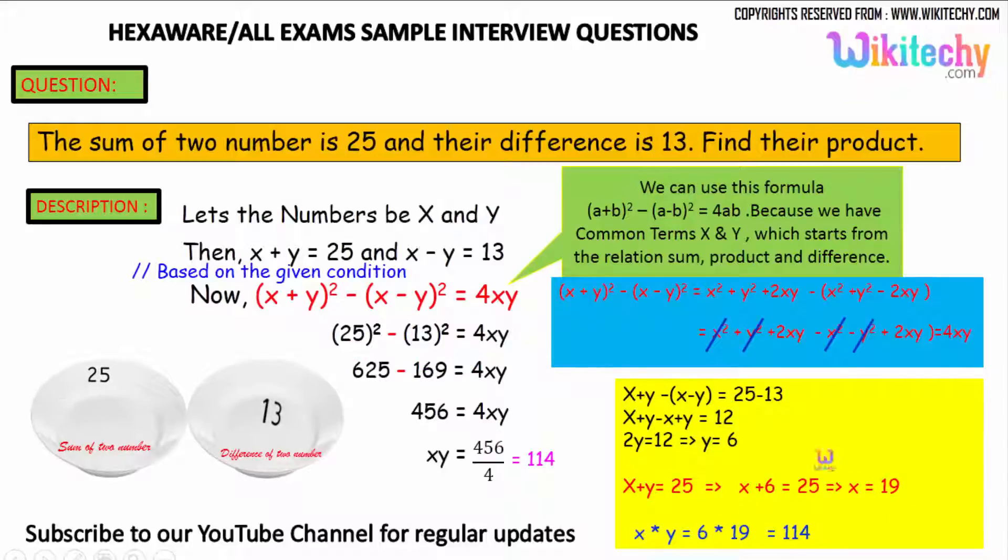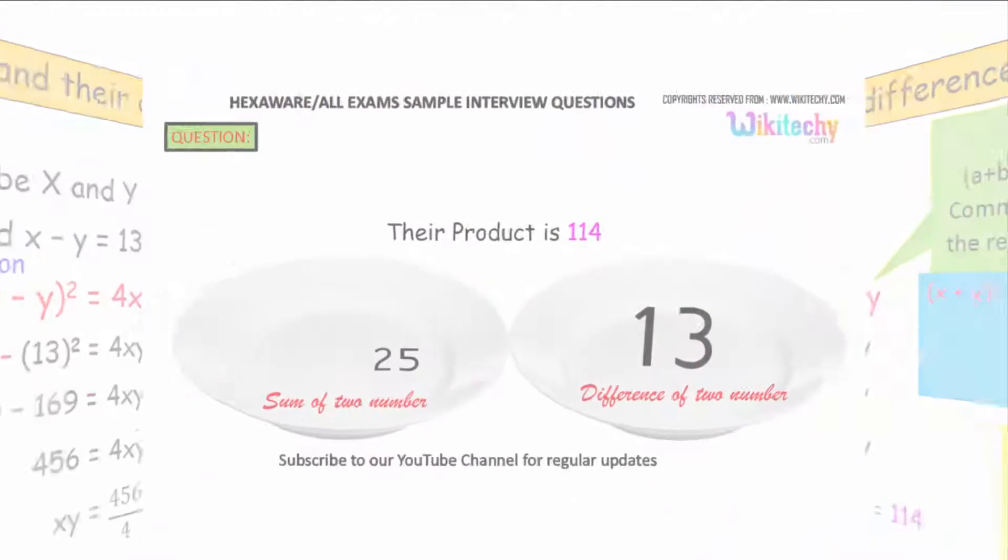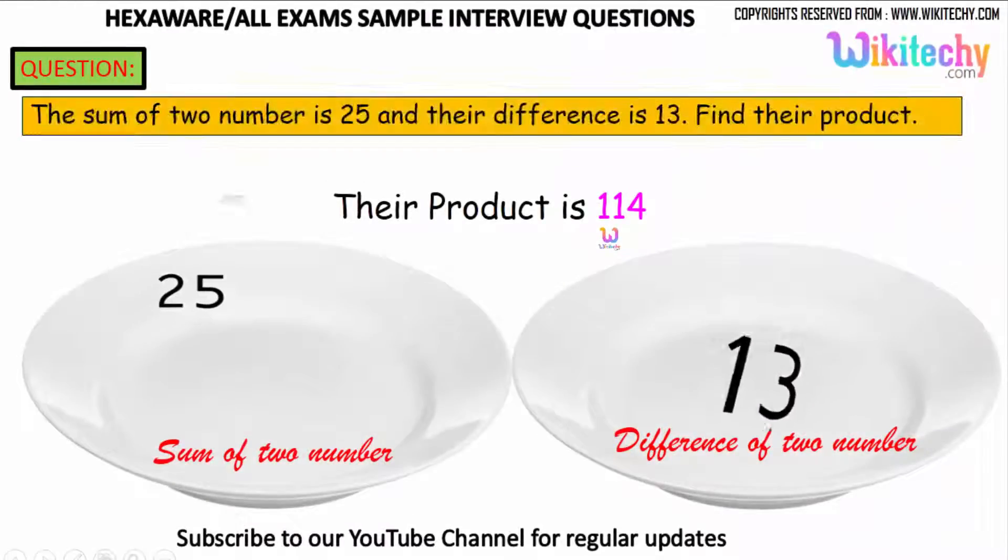You can use both methods, any one option to find the product. So the product of two numbers is 114. That's the answer.